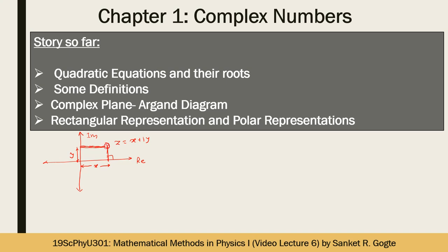Then we saw two different representations of a complex number. One is the rectangular representation written as x + iy. The other representation is r(cosθ + i sinθ), which stems from the polar coordinate system. In this representation, r is nothing but |z|, the modulus or absolute value of the complex number, which is the square root of x² + y².